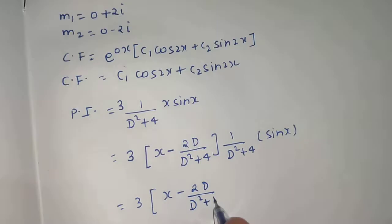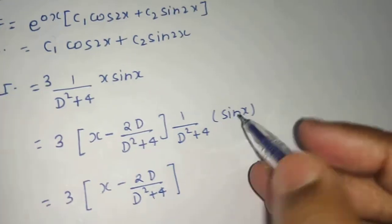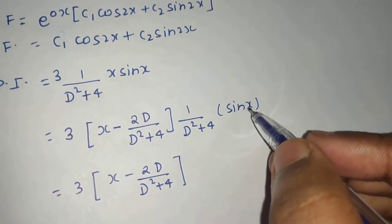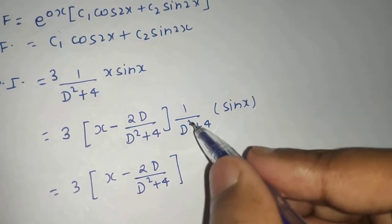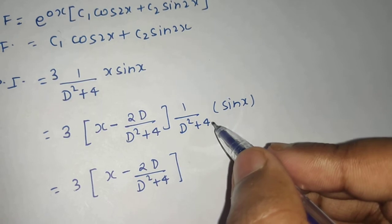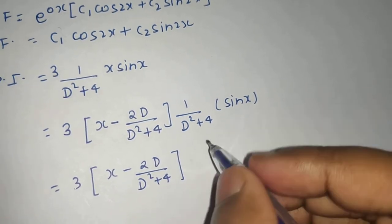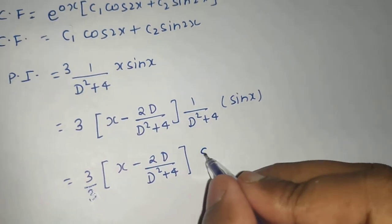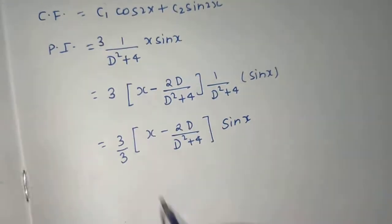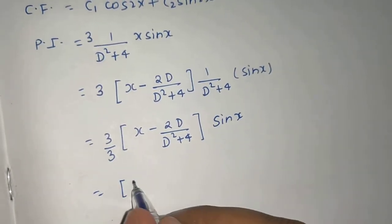Now first you will solve this. sin(ax), so a² is 1, minus of a² is -1. So -1 + 4, that will give you 3. So 1 upon 3 instead of writing here, I am taking that out and sin(x) remains here. So 3 by 3 is 1.